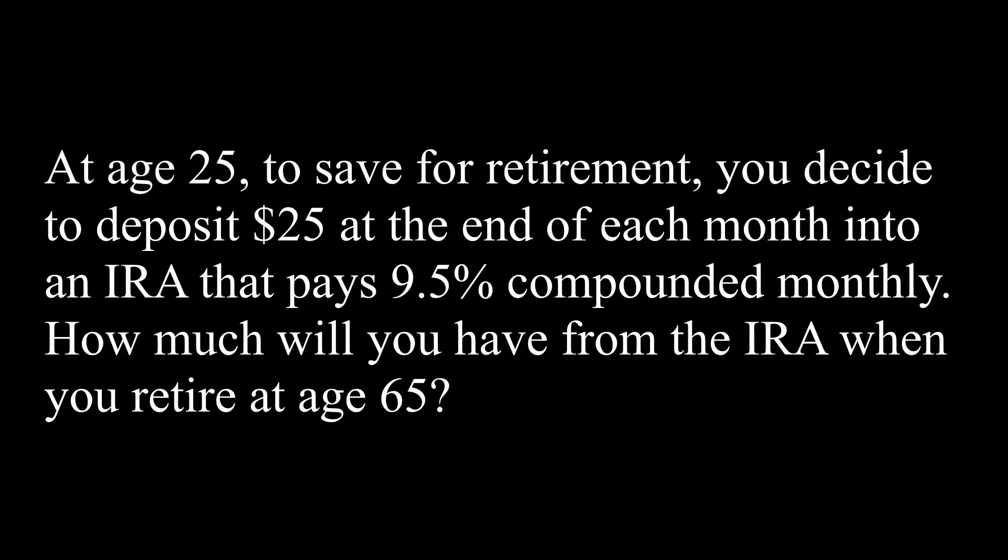So for this example, we have that at age 25 to save for retirement, you decide to deposit $25 at the end of each month into an IRA, individual retirement account that pays 9.5% compounded monthly. How much will you have from the IRA when you retire at the age of 65?